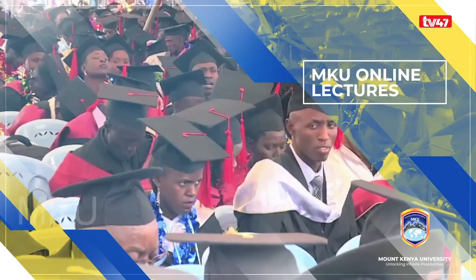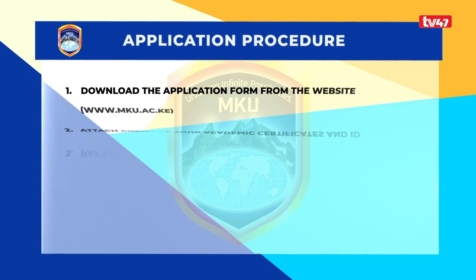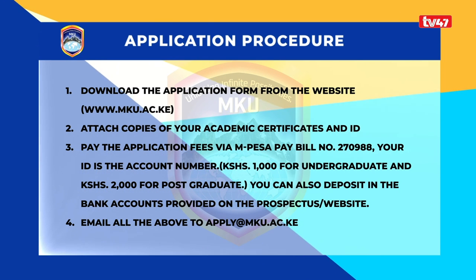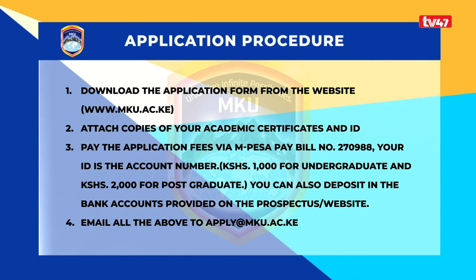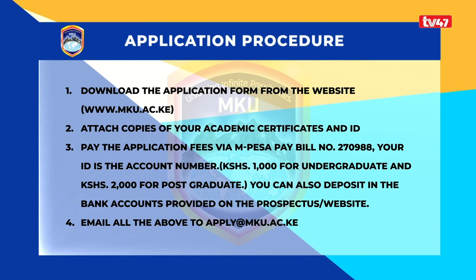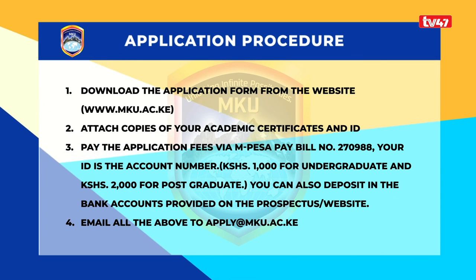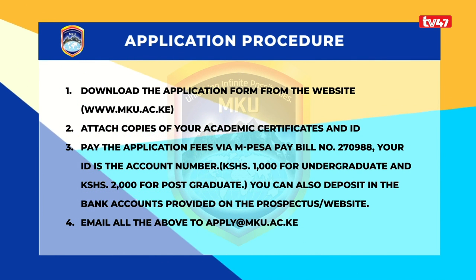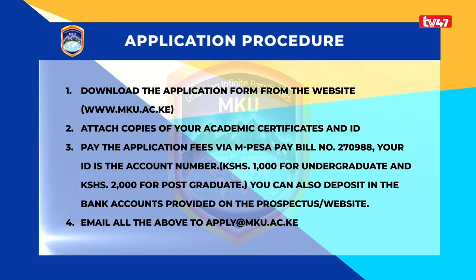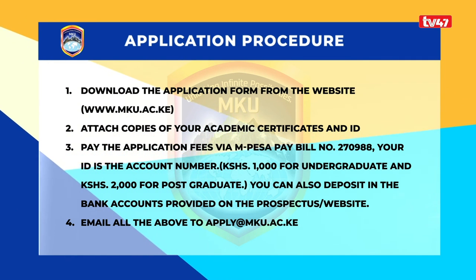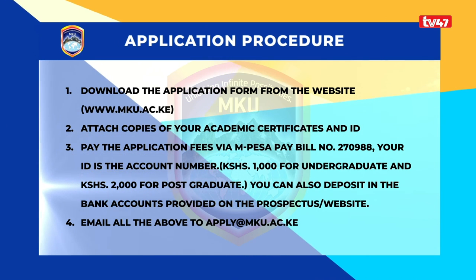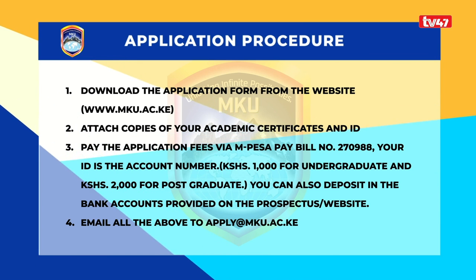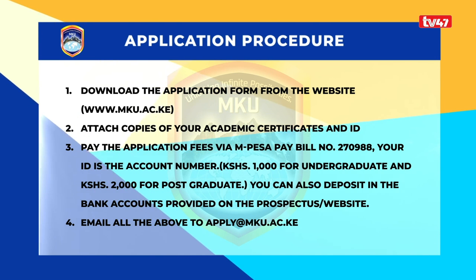To complete your online application: download the application form from www.mku.ac.ke. Attach copies of your academic certificates and ID. Pay the application fees via M-PESA Pay Bill number 270-988 — your ID is the account number. 2,000 shillings is the charge for a postgraduate. You can also deposit in the bank accounts provided on the website, then email all the above to apply@mku.ac.ke.